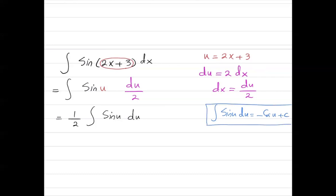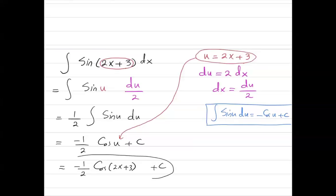So you can write this integral as negative 1 half cosine u plus constant of integration. Don't forget to do the substitution here. And your integral is negative 1 half cosine parentheses 2x plus 3 plus constant of integration.